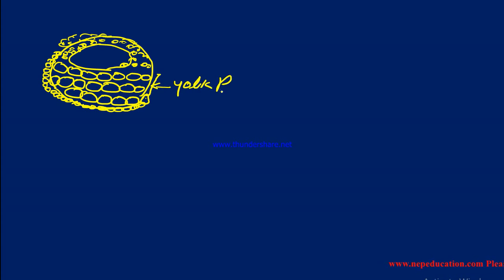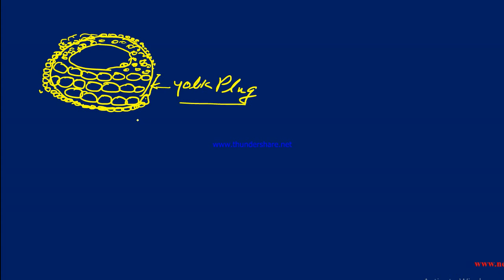As a result of epiboly, the micromeres form the ectoderm. The micromeres cover the megameres, but they leave a small area of megameres uncovered — this small area is the yolk plug. So in epiboly, micromeres migrate from the animal pole to the vegetal pole and cover the megameres except for a small area, the yolk plug.